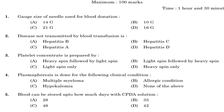Second question: disease not transmitted by blood transfusion. Option A: Hepatitis B. Option B: Hepatitis C. Option C: Hepatitis A. Option D: Hepatitis D. Answer is Option C, Hepatitis A. Hepatitis A is transmitted by eating contaminated food and water.